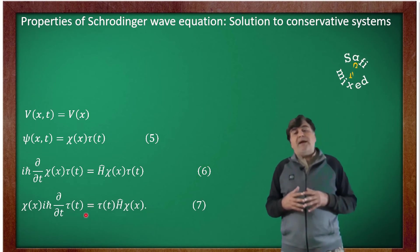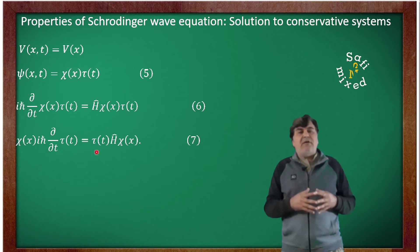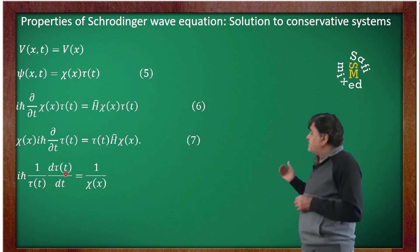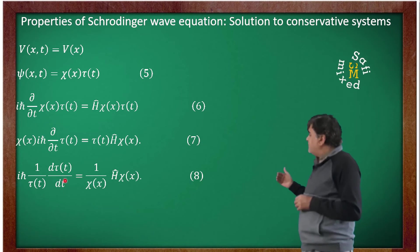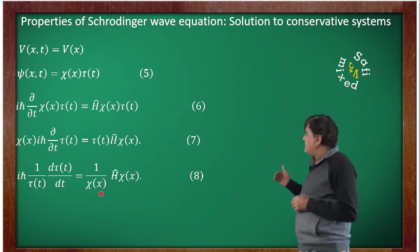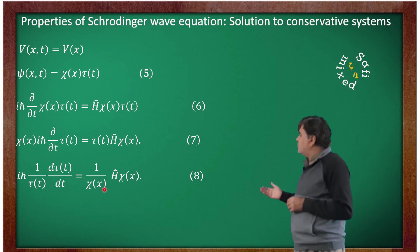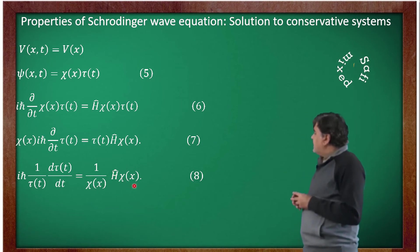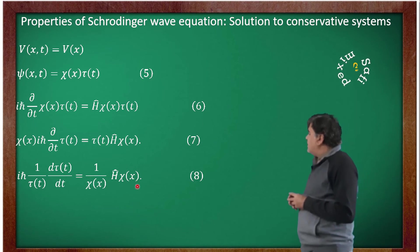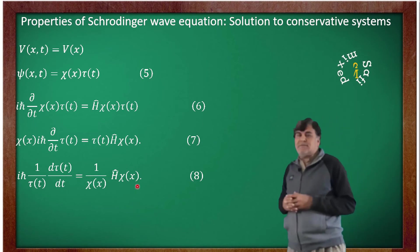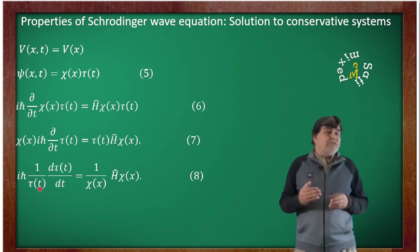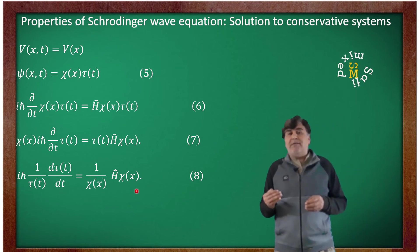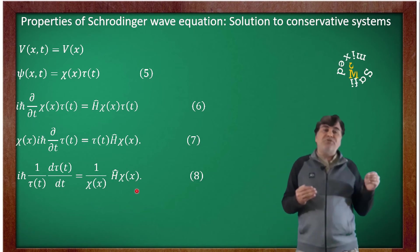Dividing this equation by χ(x) times τ(t), we can rewrite it as: iota h-bar times one over τ(t) times d over dt applied to τ(t) equals one over χ(x) times H-operator applied to χ(x). Now obviously the left side of the equation is only time dependent and the right side is only position dependent.